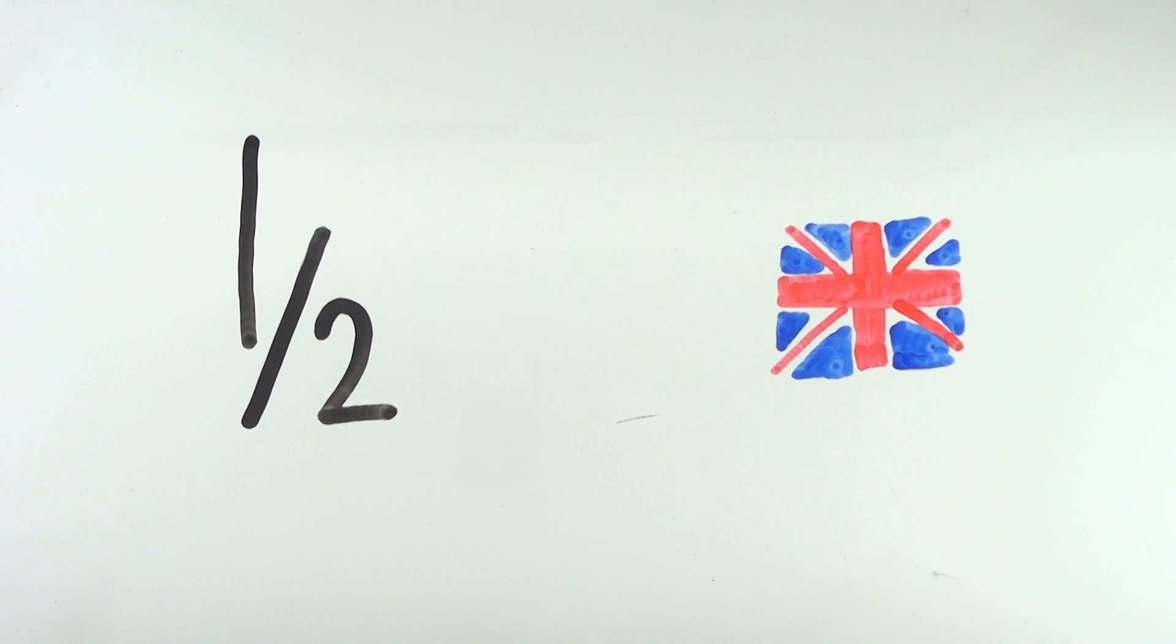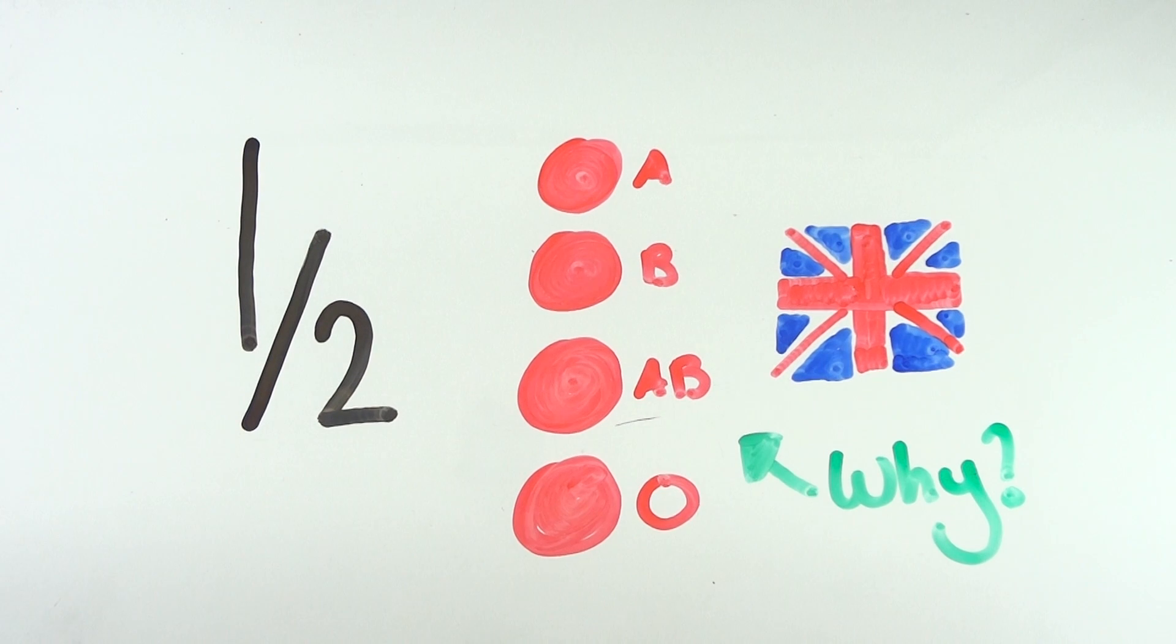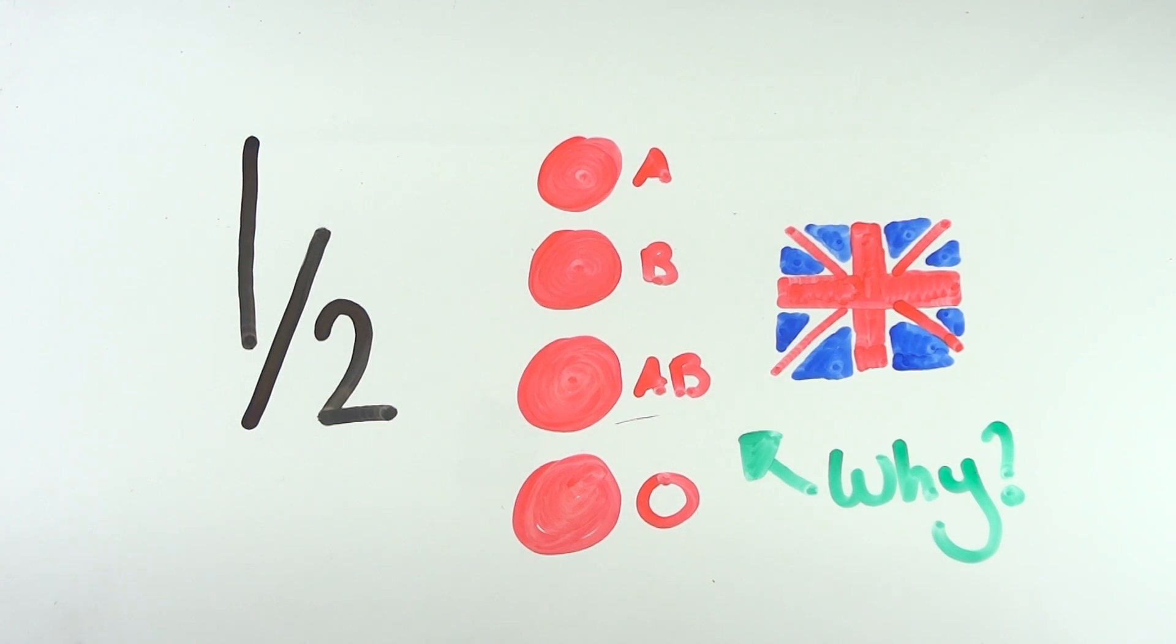you would have surely heard of there being many different blood types, with most people knowing of A, B, AB and O. This begs the question though, why are there different blood types?